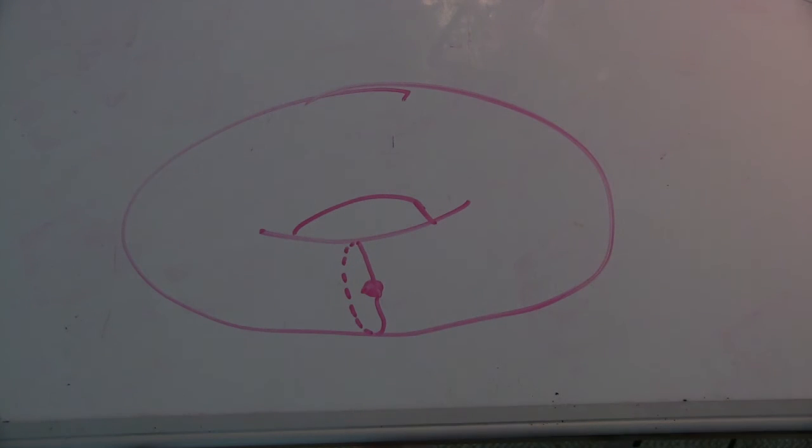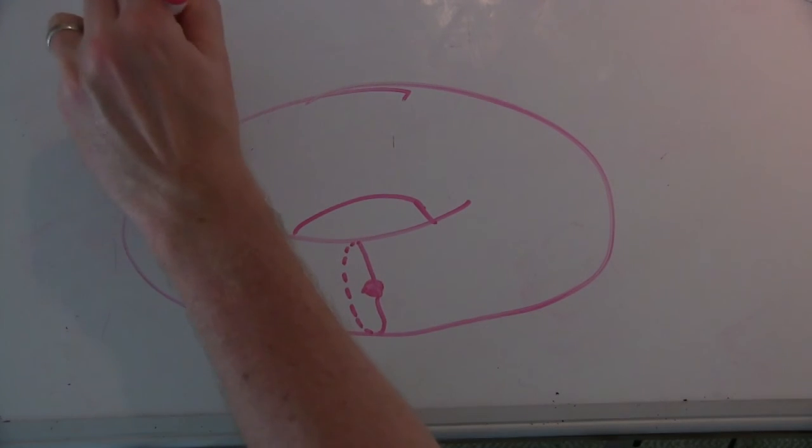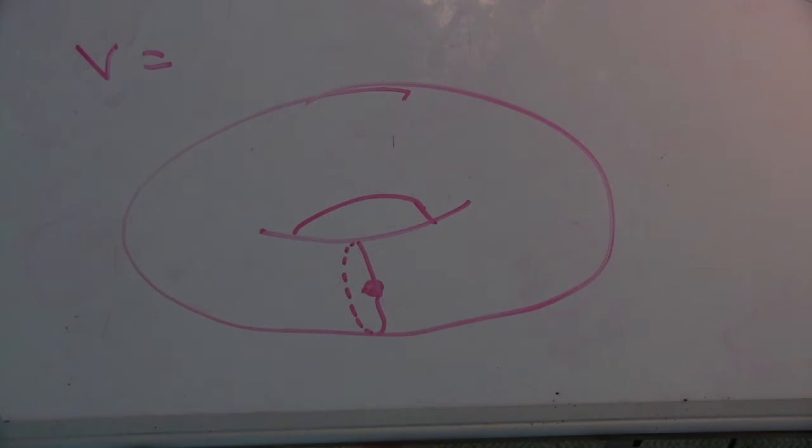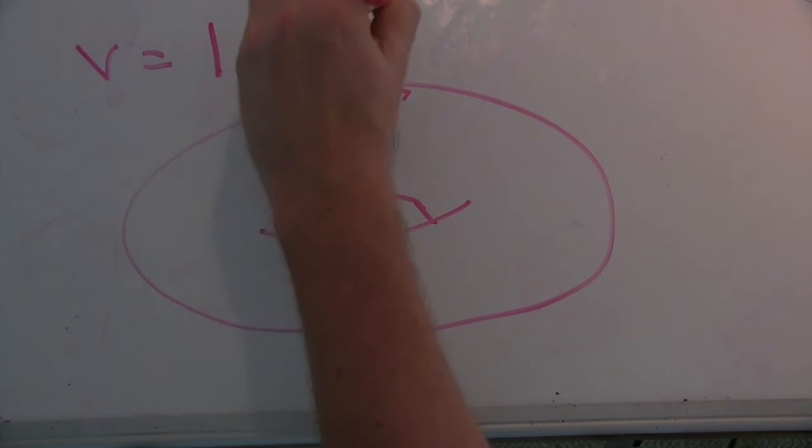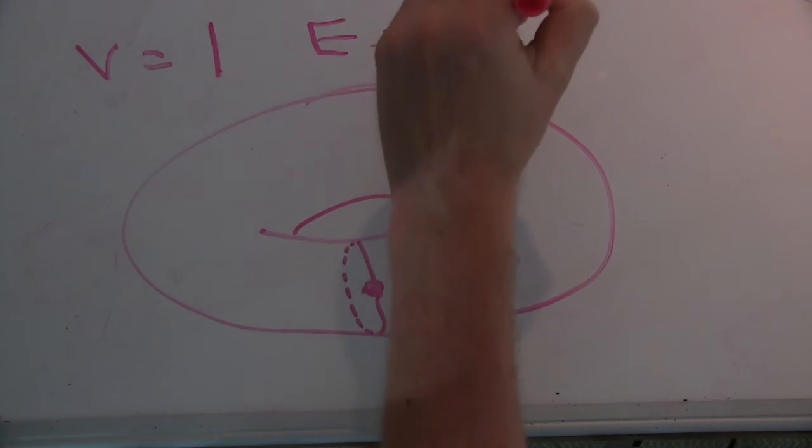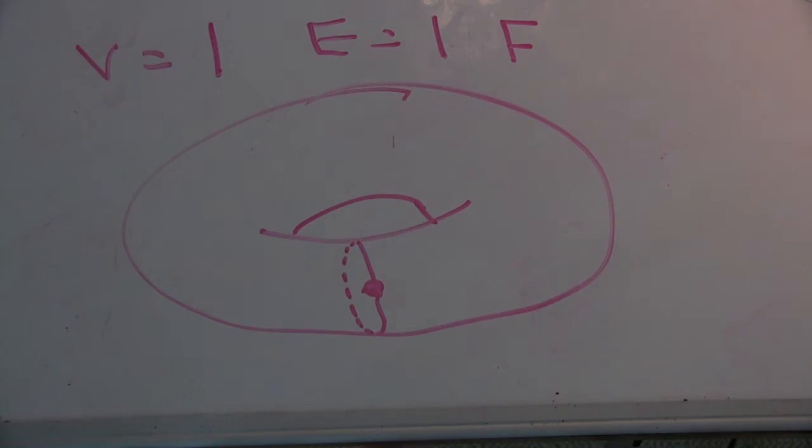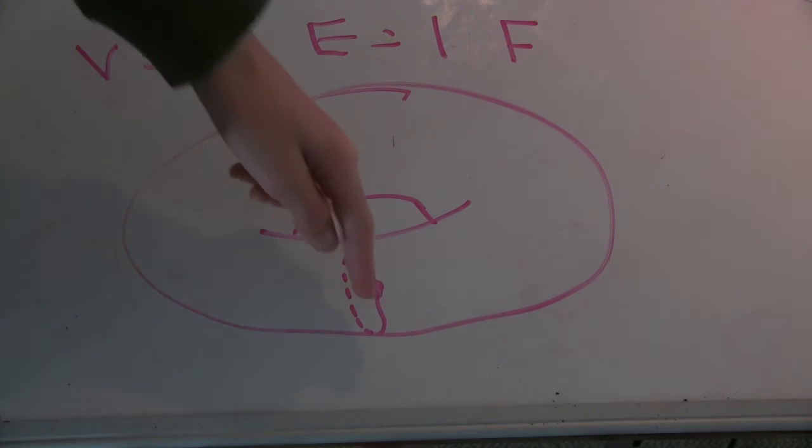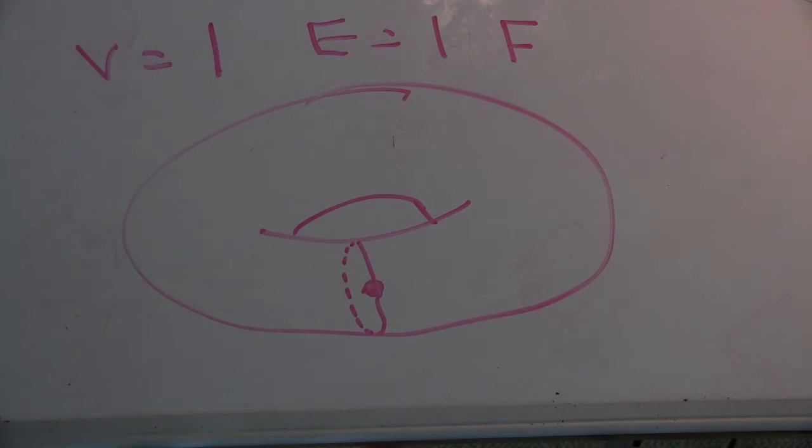So how many vertices do I have? You have one. How many edges do I have? One. And how many faces do I have? Well, I guess you'd also have one. You'd just have the circular face here.